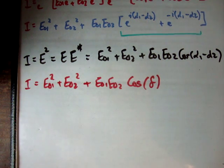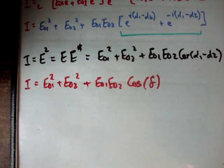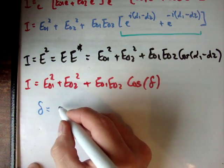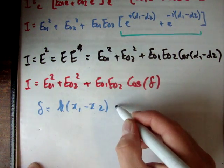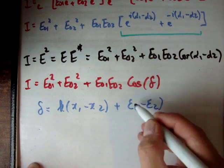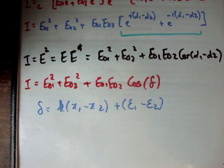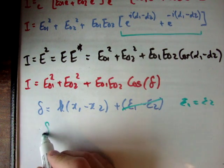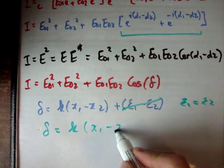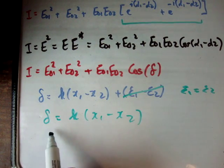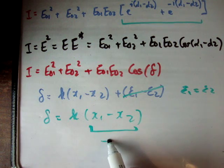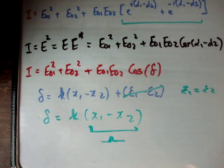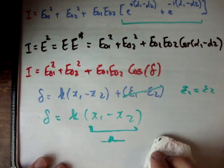Delta equals k times (x1 - x2) plus (ε1 - ε2). What happens if there's no phase difference, where ε1 equals ε2? Then that term goes away, and delta equals k times (x1 - x2). This is exactly k times the optical path difference — which is what I said earlier: delta equals the wave number times the optical path difference.